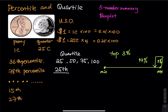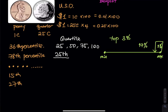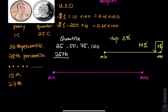We don't really use quartile in everyday language, but here is how we divide data using quartiles. Start with a data set. Step one: sort the data in ascending order from the smallest value to the largest value. Identify the minimum and the maximum.